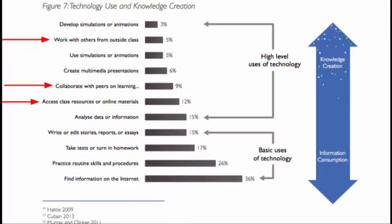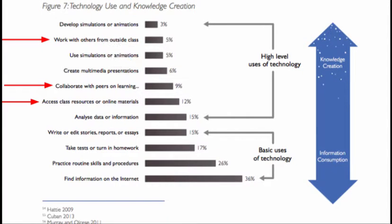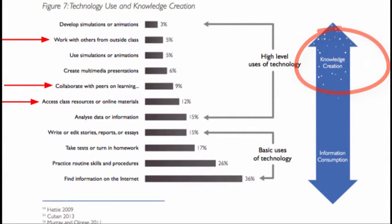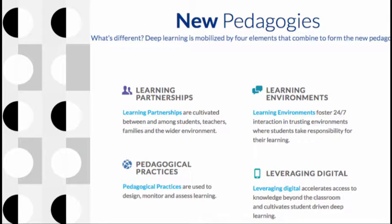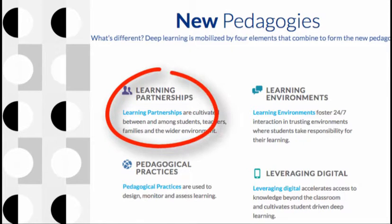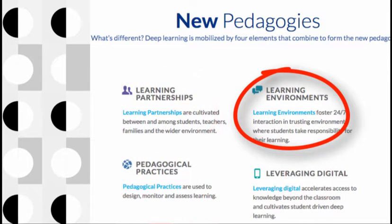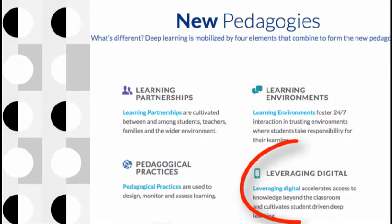Twitter allows teachers and learners to collaborate with peers on learning, access class and online materials, and work with others from outside class. This shows learning with a higher use of technology, which enables knowledge creation rather than information consumption. Twitter affords all of the elements that mobilise deep learning: the establishment of learning partnerships, designing, monitoring and assessing learning, access to 24/7 learning environments, and leveraging digital technology.